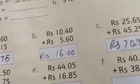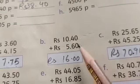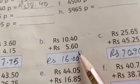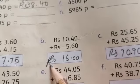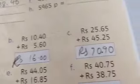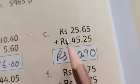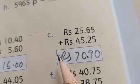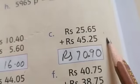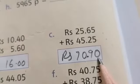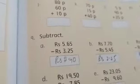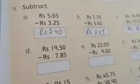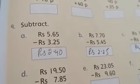Rupees 10.40 plus Rupees 5.60 equals Rupees 16. Rupees 25.65 plus Rupees 45.25, Rupees 70.90. Complete the rest of the parts. You have to turn on your book. You can practice in your notebook, in your rough register or your neat notebook.